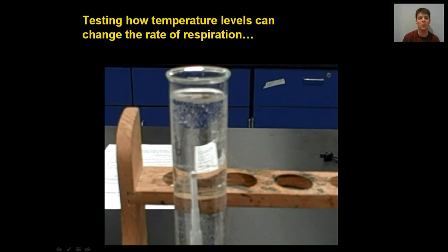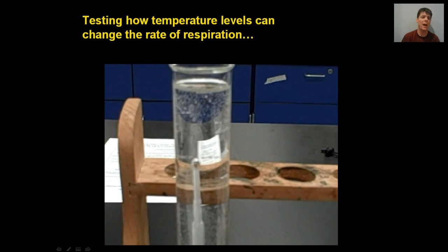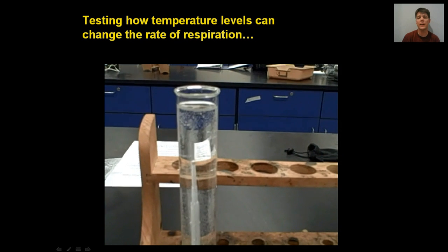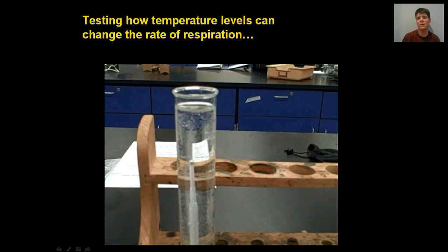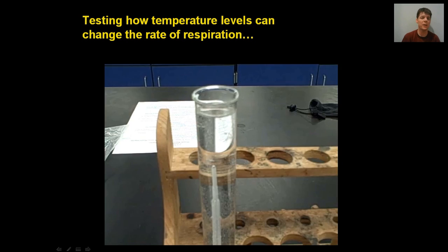If we see a larger number of bubbles, this means that the yeast are producing more CO2, so that means we have a faster rate of respiration. If the bubbles are being produced more slowly, that means that the yeast are making less CO2, and it means that the rate of respiration is much slower.